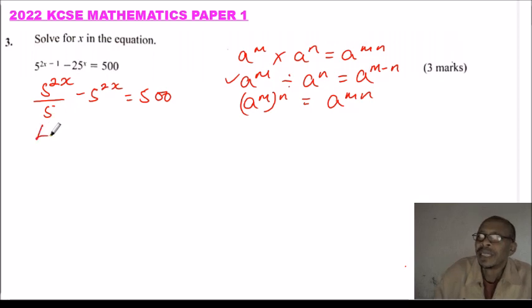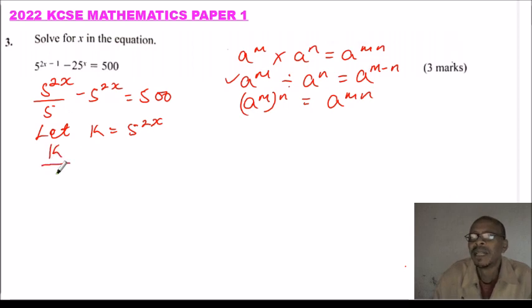Now with that, we say that k equals 5^(2x). So we can rewrite our equation here and say k divided by 5 minus k equals 500.